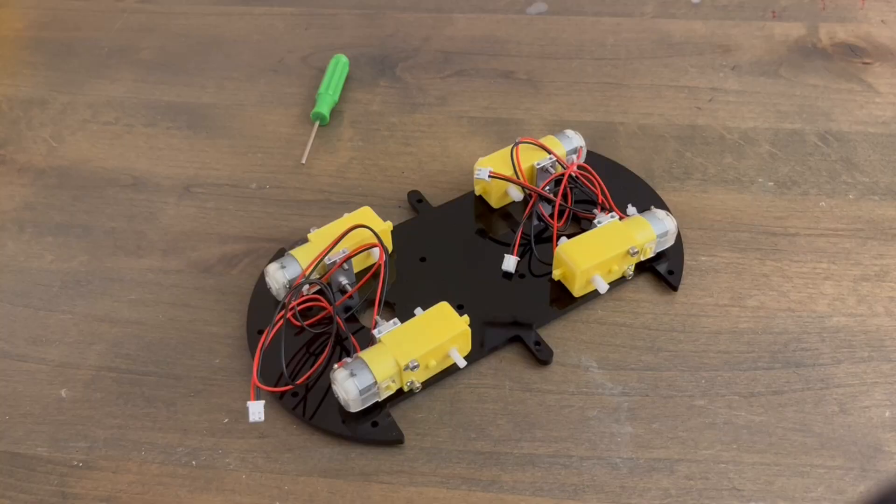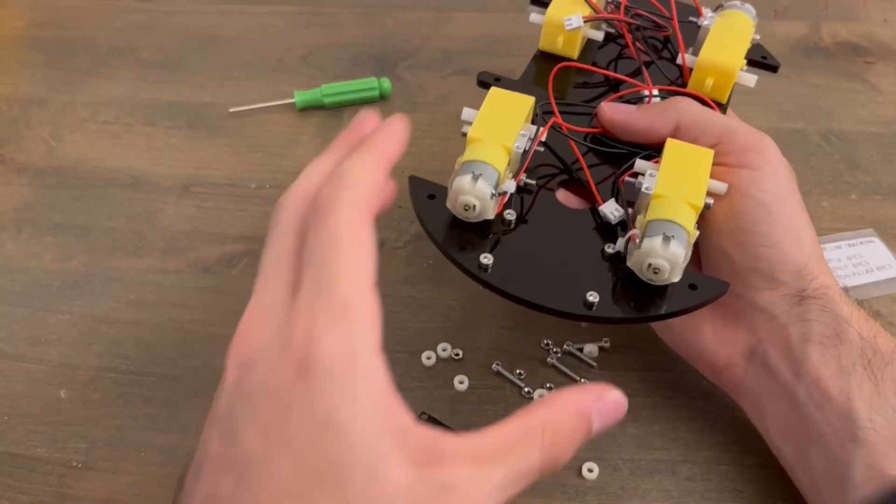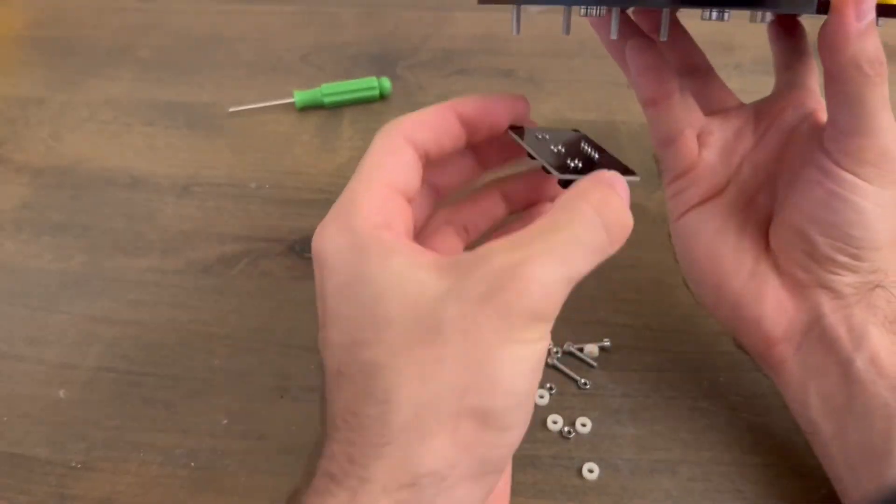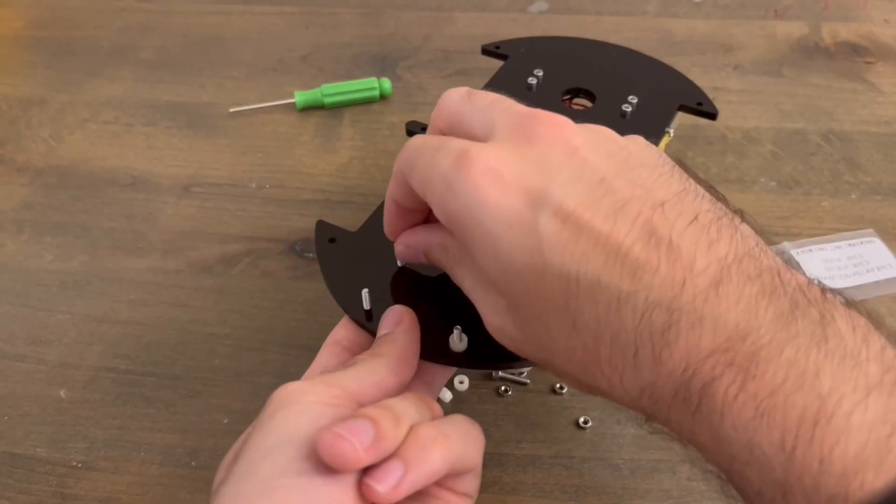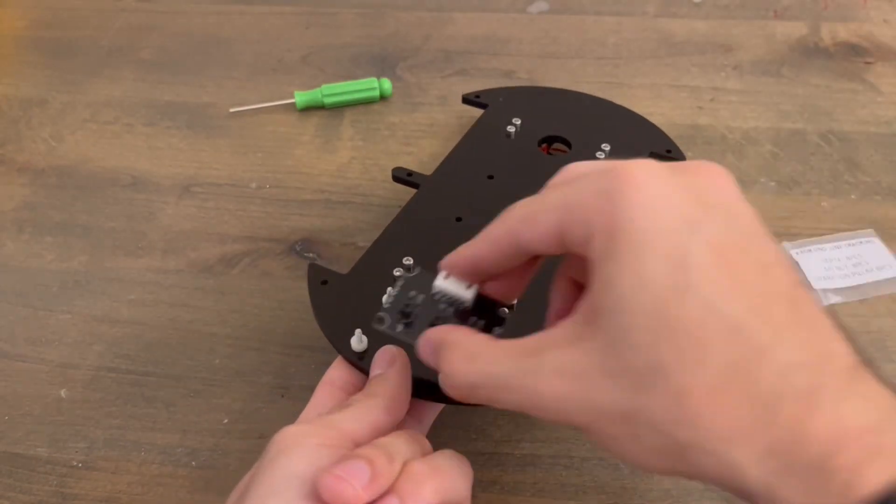After mounting the motors onto the base, it's time to assemble the line tracking module. It mounts beneath the bottom acrylic plate so that it has a clear view of the floor using separation pillars, socket screws, and M3 nuts.